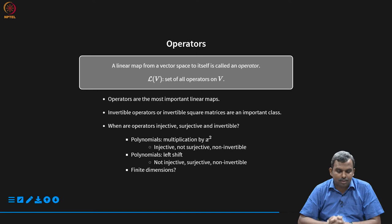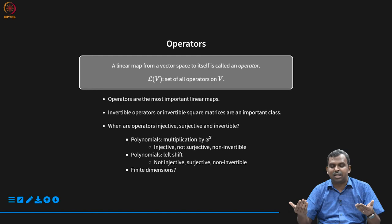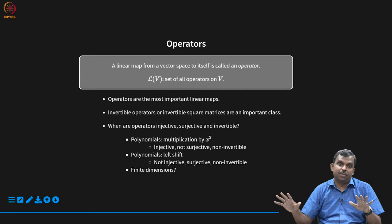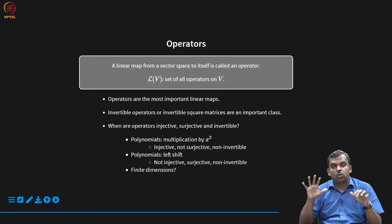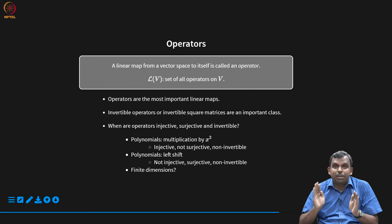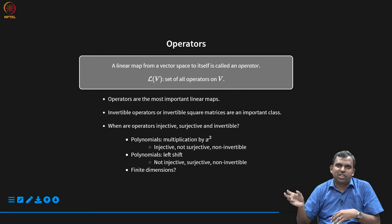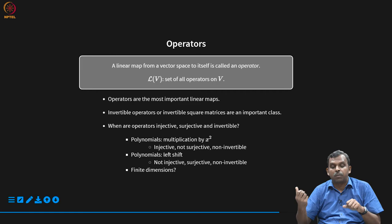Operators are easily the most important linear maps, with many interesting connections — particularly invertible operators. Operators correspond to square matrices, since both input and output have the same dimension. A natural question: in finite-dimensional spaces, what can one say about injectivity, surjectivity, and invertibility for operators? In infinite dimensions, strange things can happen — injectivity without invertibility, surjectivity without invertibility. In finite dimensions, it seems like you should not have so much flexibility.